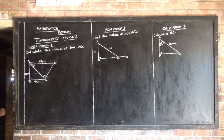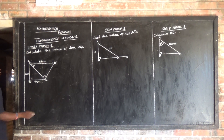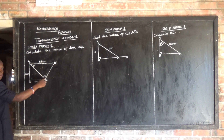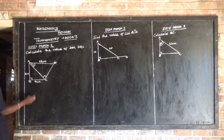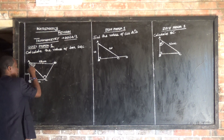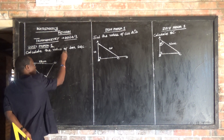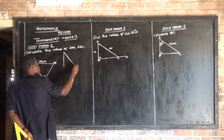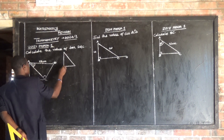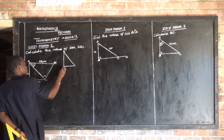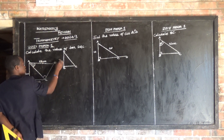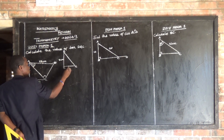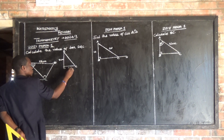Now, for us to find this angle, first we are supposed to know this side — we are supposed to know AC. So we have this triangle. This is A, this is B, this is C. This side is three centimetres, and this is four centimetres.